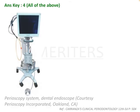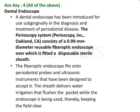This is how a perioscope looks clinically — the visualisation is done on the screen while the tip goes into the sulcus, helping in visualisation of furcations and the sub-gingival pocket. A dental endoscope has been introduced for sub-gingival diagnosis and treatment of periodontal disease via the perioscopy system. It consists of a 0.9 mm diameter reusable fiber optic endoscope with a disposable sterile sheet.